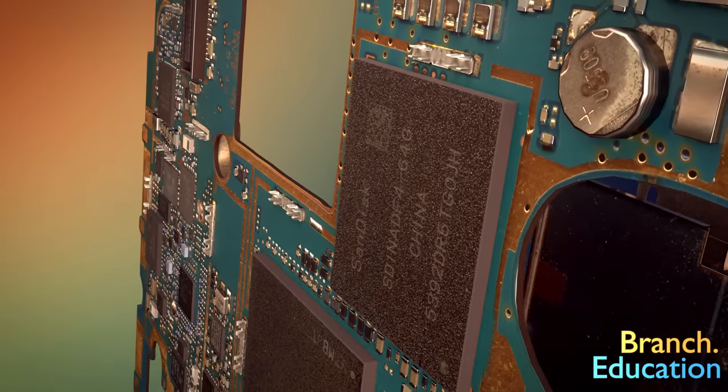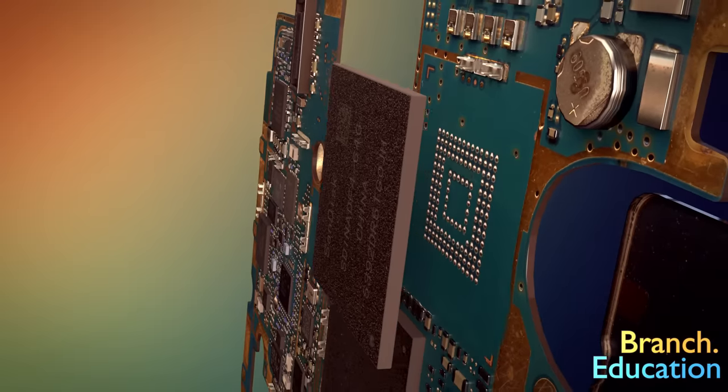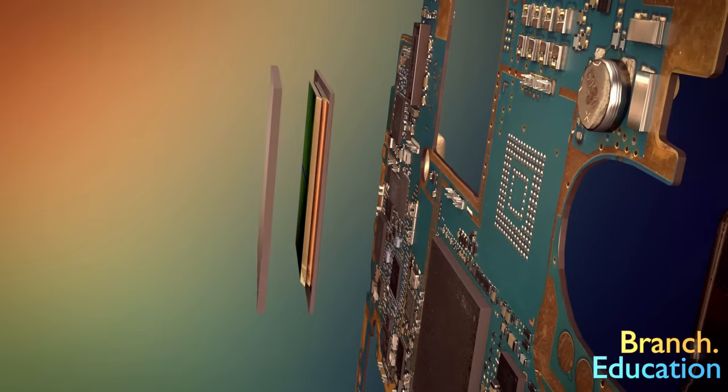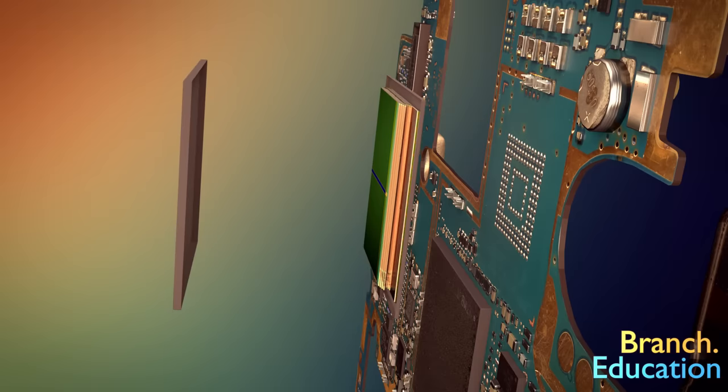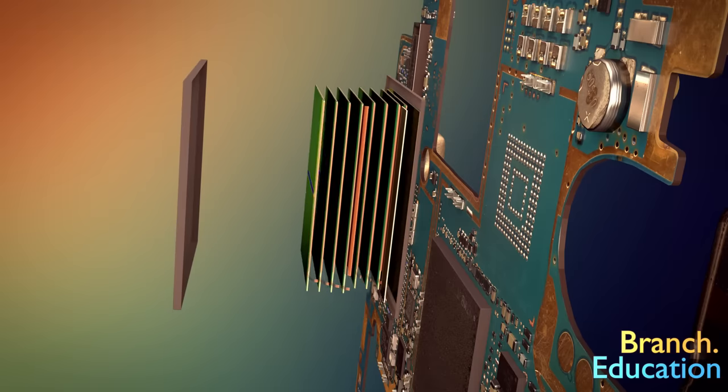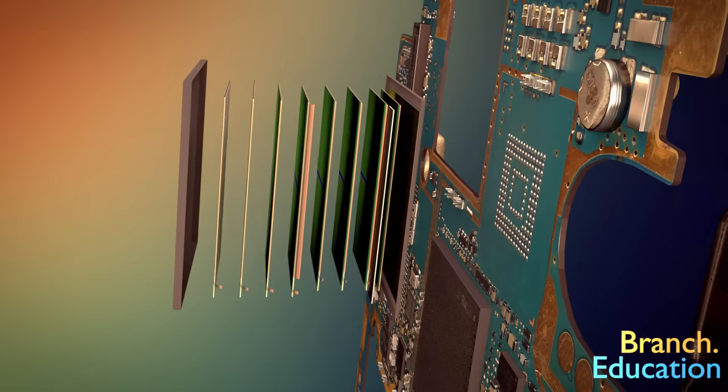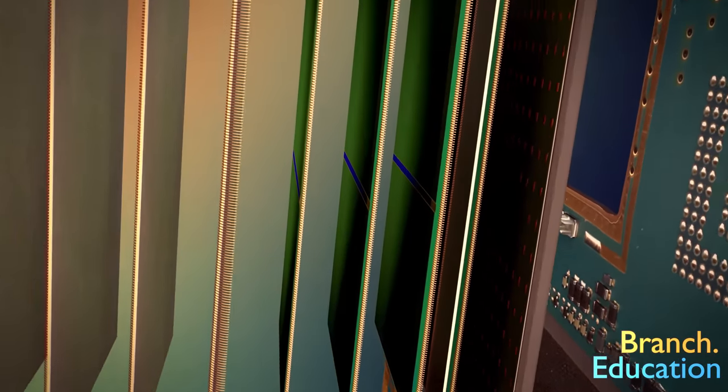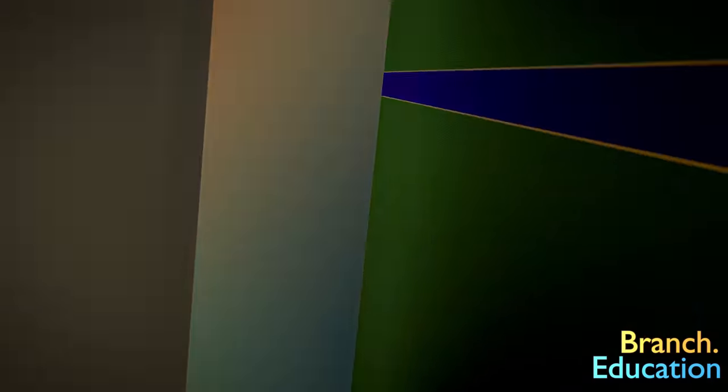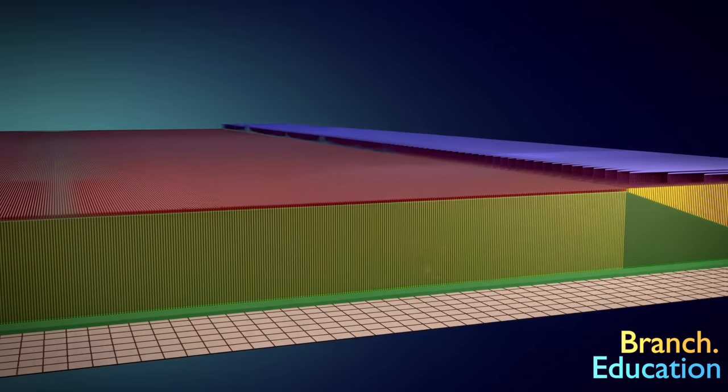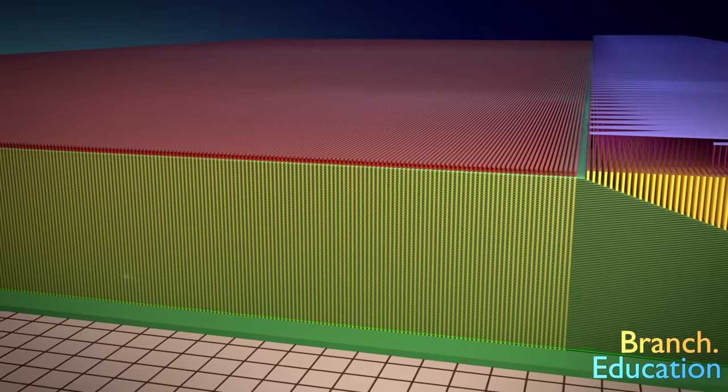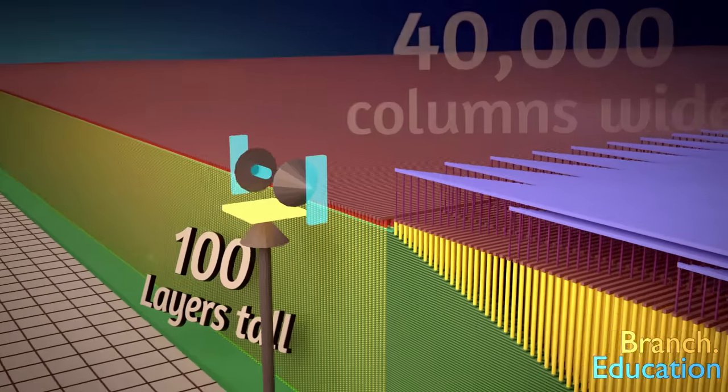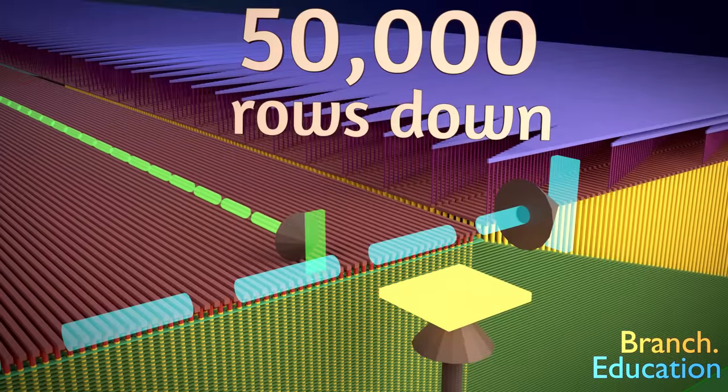But this memory storage microchip is far from mundane. Because the level of technology inside it will astound you. To begin, let's open this microchip and investigate. First, we see that this one component holds a stack of eight chiplets. Let's zoom in further to a nanoscopic view of one of these chiplets, and in it, we find a massive array of memory cells stacked 100 layers tall by 40,000 columns wide and 50,000 rows down.